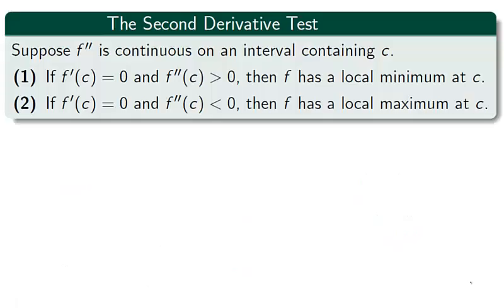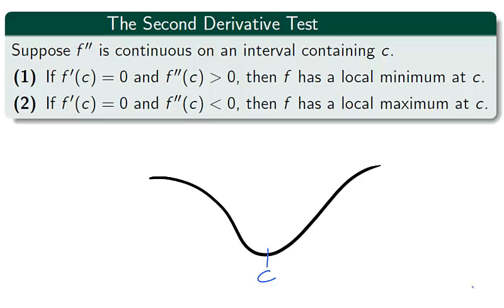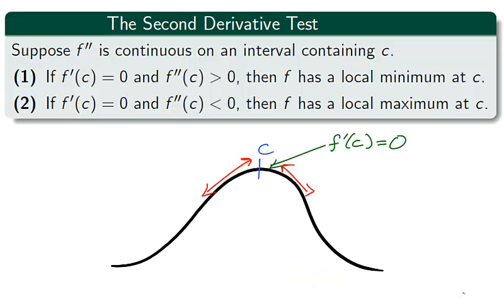A final application of the second derivative to the shape of a graph is the second derivative test. If the second derivative is continuous about a point c, and c makes the first derivative zero, and the second derivative is positive, then c is a local minimum of f. Picture a typical local minimum: the function decreases then increases with a smooth transition, no cusps or corners, and a horizontal tangent at c. The function is always above the tangent line at points bordering c, meaning the interval about c is concave upwards. A point with a horizontal tangent which is concave upwards is a local minimum. In the same way, a point with a horizontal tangent which is concave downwards is a local maximum.